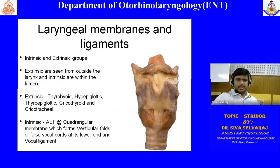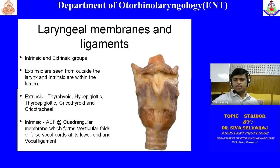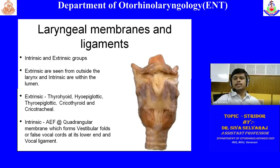Laryngeal membranes and ligaments can be divided into intrinsic and extrinsic groups. Extrinsic membranes include the thyrohyoid membrane and thyrohyoid ligaments — connecting the hyoid bone and thyroid cartilage. The thickened portion is the ligament and the thin flat portion is the membrane. There are two defects in the thyrohyoid membrane on both sides through which the superior laryngeal nerve and vessels enter the larynx.